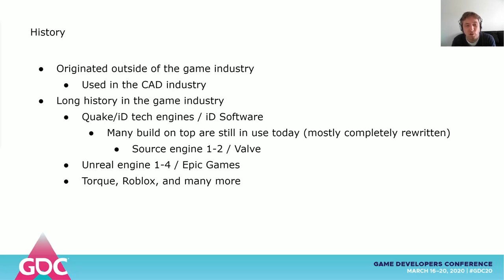In the game industry, Quake was the first game to use it for level design. A lot of game engines, such as Valve's Source engine, have been based on the Quake engine and inherited its use of CSG. Other engines, like Unreal, were inspired by Quake and also used CSG for level design.